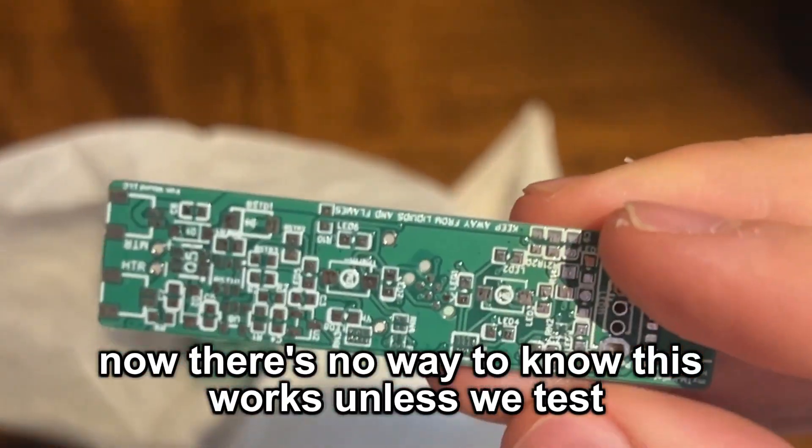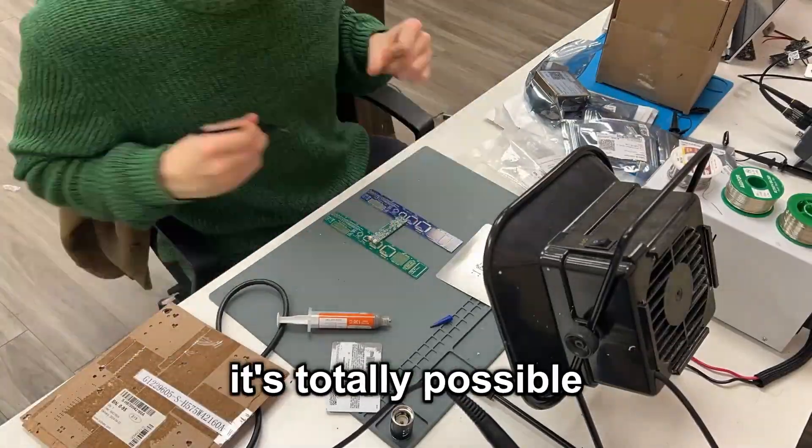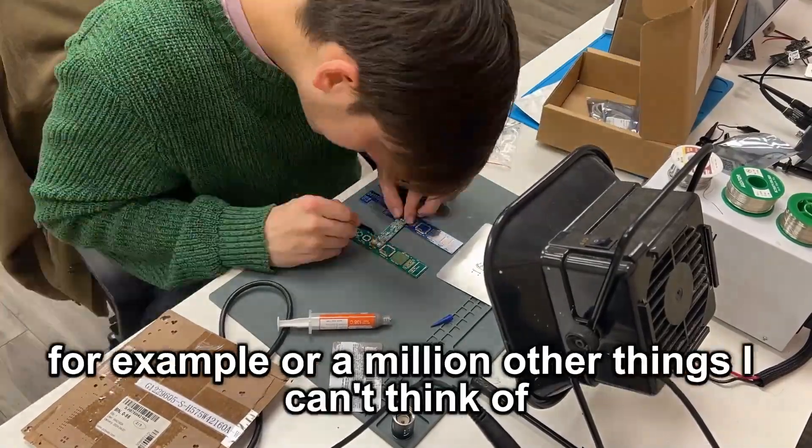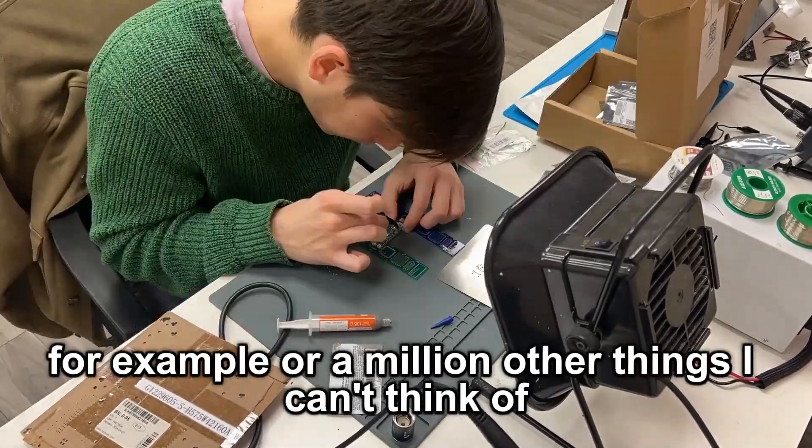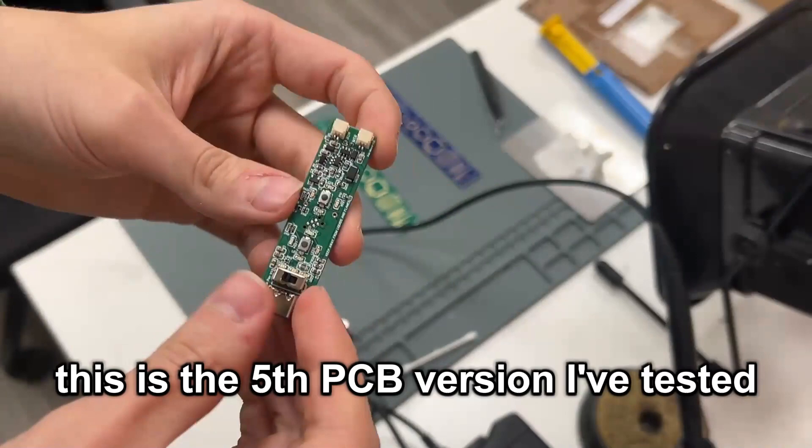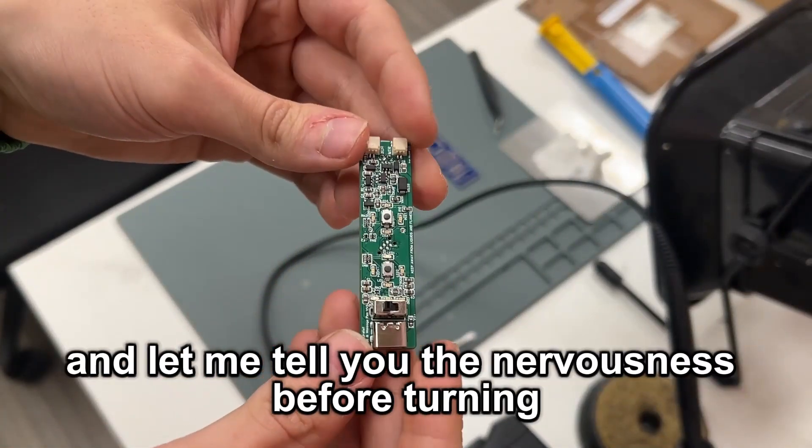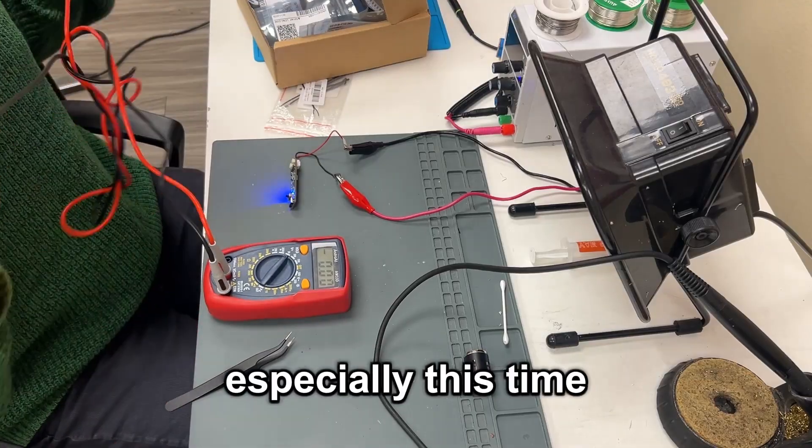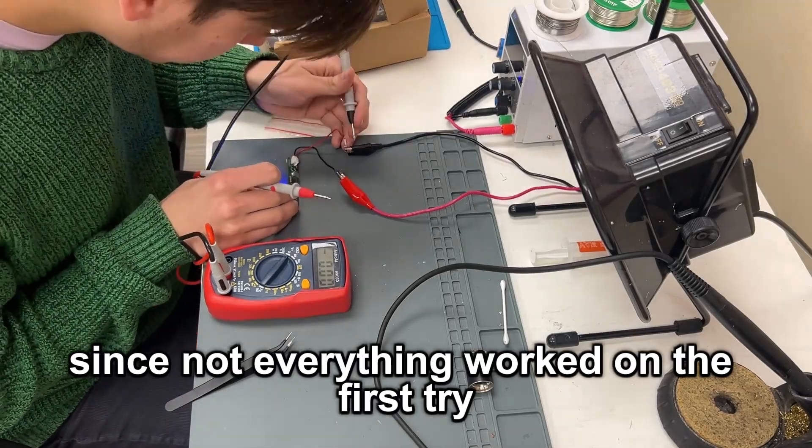Now, there's no way to know this works unless we test. It's totally possible that the TRIAC blows before the fuse and isn't able to turn off the device, for example. Or a million other things I can't think of. This is the fifth PCB version I've tested, and let me tell you, the nervousness before turning it on for the first time never gets better. Especially this time, since not everything worked on the first try.